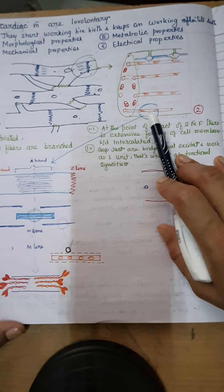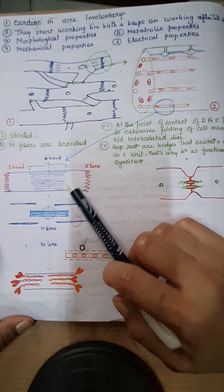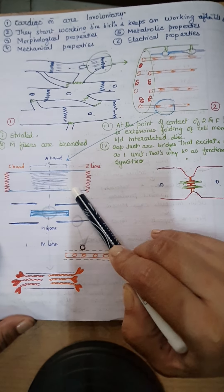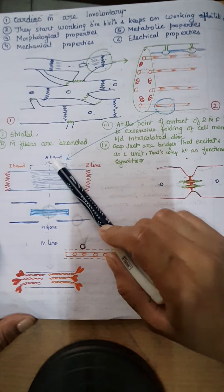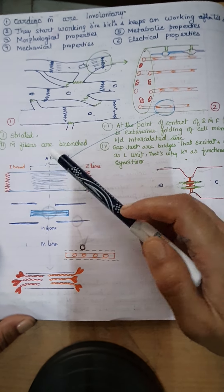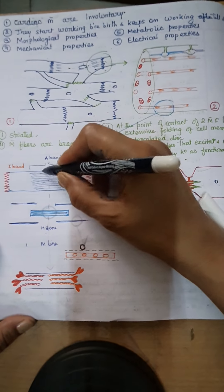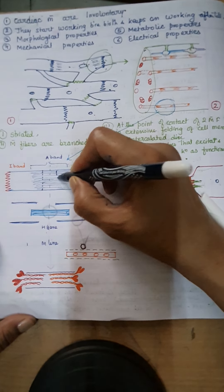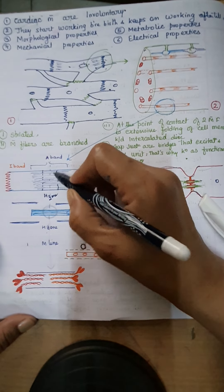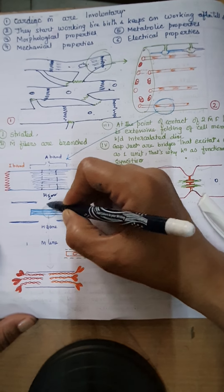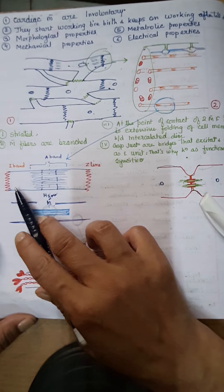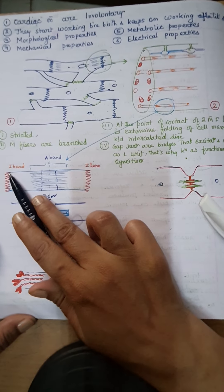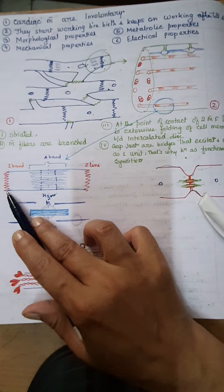When we enlarge the myofibril, it shows certain dark and light areas. The central darker area is known as the A band. Within the center of the A band there is a relatively lighter area known as the H zone. Within the H zone there is a midline known as the M line. On either side of the A band there is a lighter zone known as the I band, which ends at a zigzag line called the Z line.